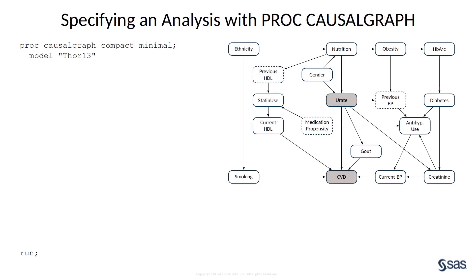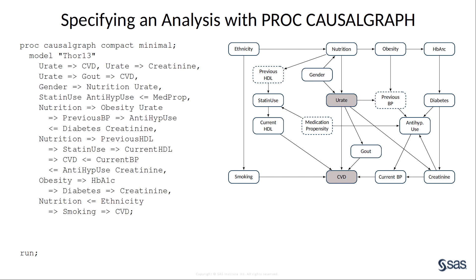You specify a PROC CAUSALGRAPH analysis by using a PROC CAUSALGRAPH statement. You specify the causal graph by using a MODEL statement. Each MODEL statement must begin with a quoted string that provides a unique name for the model. The CausalGraph procedure supports a very flexible grammar for model specification. You use this grammar to specify all the direct causal effects that you believe need to be considered for the process you wish to study. For additional information about the model specification grammar, see the PROC CAUSALGRAPH documentation.